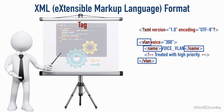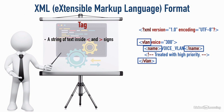Here's another one — we've got a VLAN tag, and notice it has some extra stuff after it: it says voice equals 300 in quotes. We'll talk about that in a moment, but this is just some extra information. This is a VLAN tag, so we've got a tag of VLAN, and inside we have a name tag and a comment that we'll discuss in a few moments. Our tag ends with a forward slash VLAN inside those less-than and greater-than brackets. That's our definition of a tag — a string of text inside those brackets with both a start tag and an end tag.